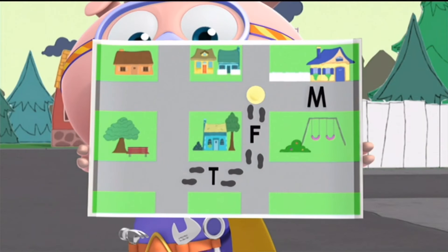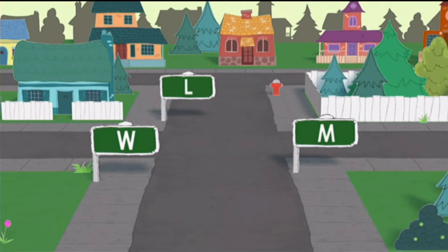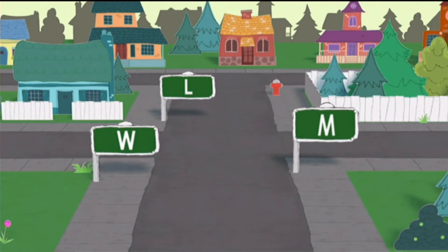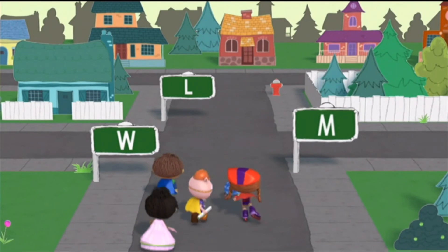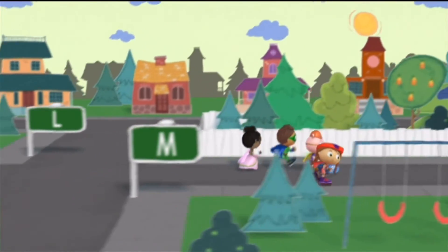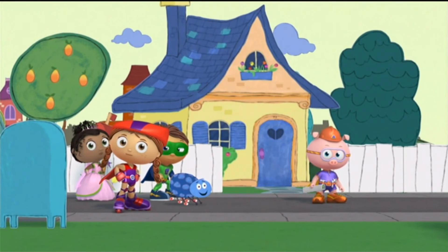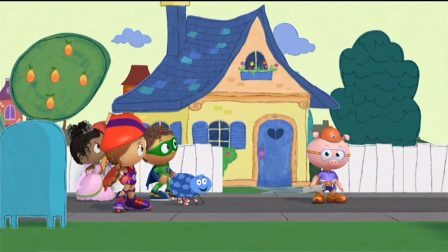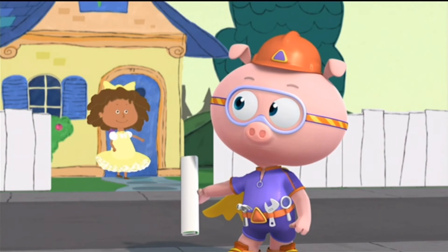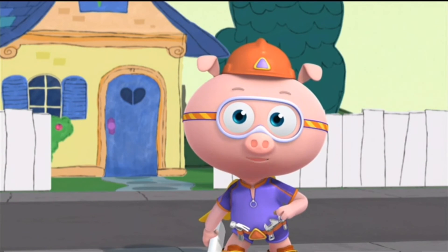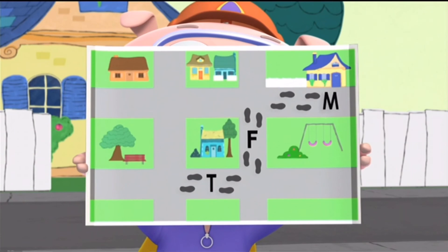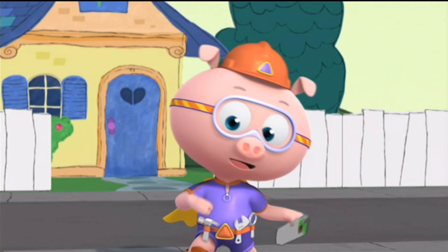Now we need M Street. Which of these streets is M Street? That one! There's M Street! Miss Muffet lives on M Street! And there she is! Leggity letters! We used our alphabet map to find Miss Muffet's house! Let's give ourselves a big thumbs up!